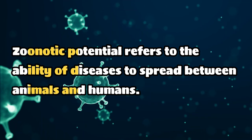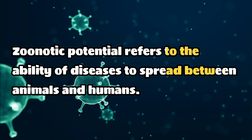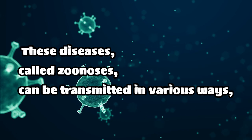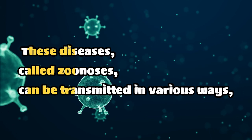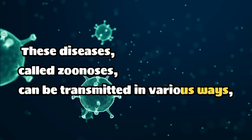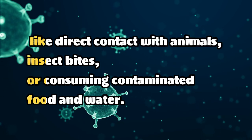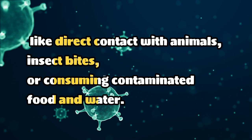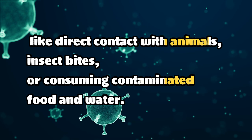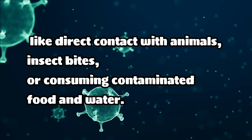Zoonotic potential refers to the ability of diseases to spread between animals and humans. These diseases, called zoonoses, can be transmitted in various ways, like direct contact with animals, insect bites, or consuming contaminated food and water.